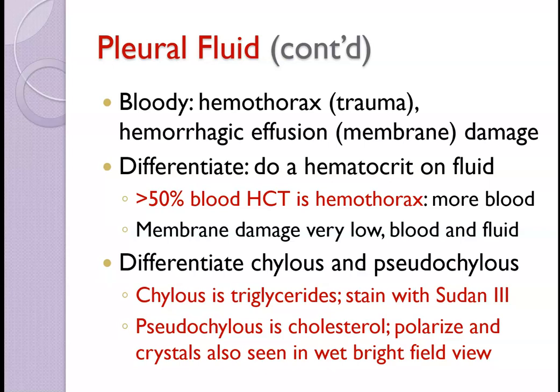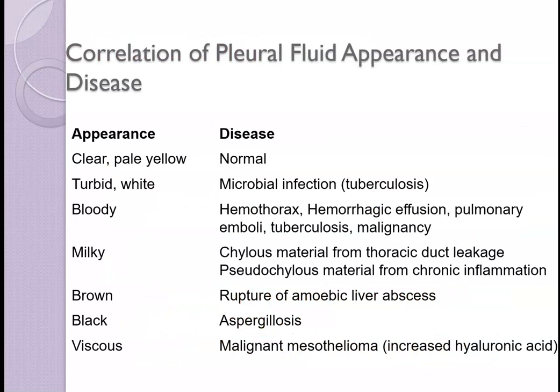For chylous material, do a Sudan III stain to see bright orange globules of neutral fats. If it's turbid and white it's usually a TB infection, though not the only possibility. Aspergillosis, a fungal infection, can cause black pleural fluid. Pseudomonas aeruginosa can cause a green tinge. There are a lot of different things that can happen.